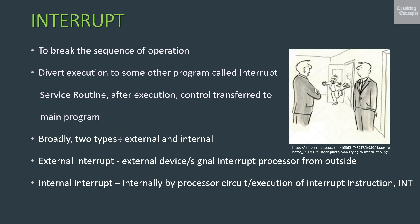Broadly, there are two types of interrupts. The first is the external interrupt and the second is the internal interrupt. In an external interrupt, an external device or signal interrupts the processor from outside — in other words, the interrupt is generated outside the processor. For example, a keyboard interrupt. The internal interrupt, on the other hand, is generated internally by the processor circuit or by the execution of an interrupt instruction INT. Examples of this type are the divide-by-zero interrupt, overflow interrupt, and interrupts due to the INT instruction.